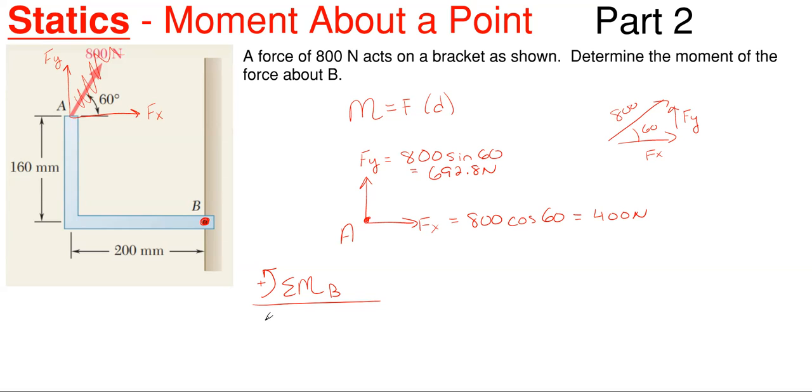So that means everything that is rotating counterclockwise about B will be positive, everything clockwise will be negative. So let's go ahead and let's start with our FY force. So we have 692.8 newtons. Our perpendicular distance would be a horizontal distance because it is a vertical force. So that would be 200 millimeters to get it over to point B. It is rotating clockwise about point B because it's going to swing around point B like this as if it was tethered to point B. So that is negative.